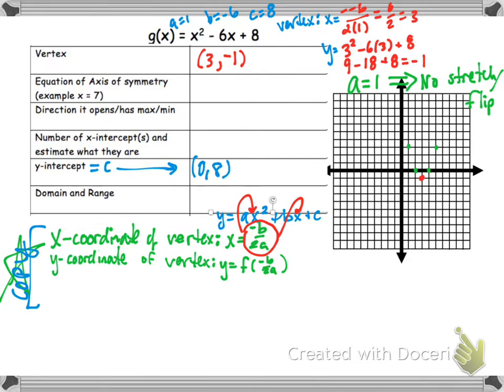Our y-intercept is the c-value when we have standard form. So plot that. There's our quadratic axis of symmetry. It goes through the vertex, x equals 3.